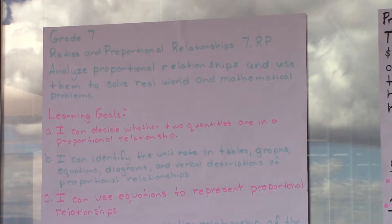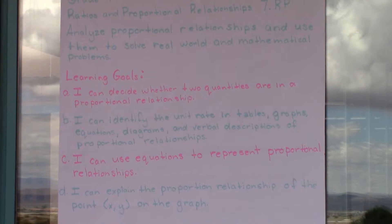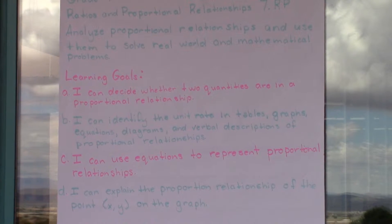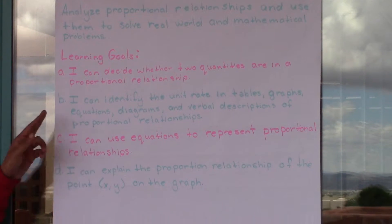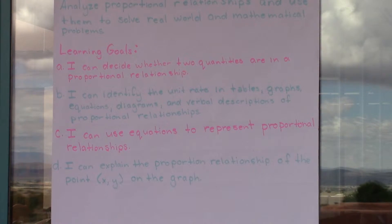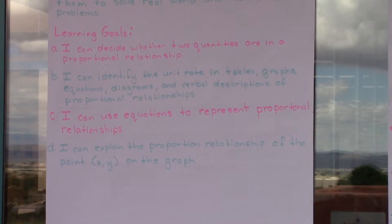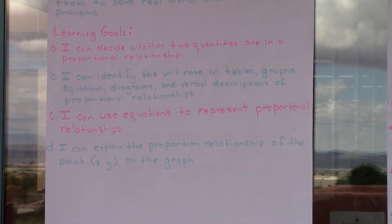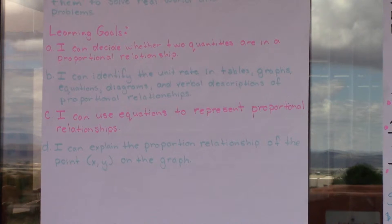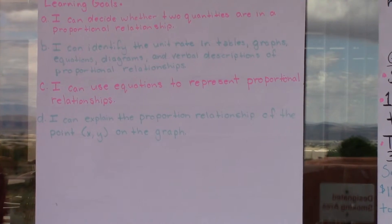Our learning goals for this standard are: A. I can decide whether two quantities are in a proportional relationship. B. I can identify the unit rate in tables, graphs, equations, diagrams, and verbal descriptions of proportional relationships. C. I can use equations to represent proportional relationships. And D. I can explain the proportional relationship of the point on the graph.